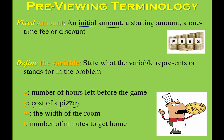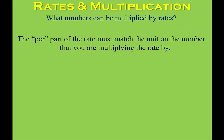For example, here we have a rate where it's cost per pizza, and here we have the number of hours. When you are defining your variable, you don't need to be super wordy, but you have to give enough information so you know exactly what you're talking about. In real life, rates are typically used for multiplication and division. If you take a rate like 20 miles per hour and multiply it by 3 hours, that gives you 60 miles traveled. Or you could take 60 miles and divide by 20 miles per hour to get 3 hours. Rates are typically a multiplication and division operation.